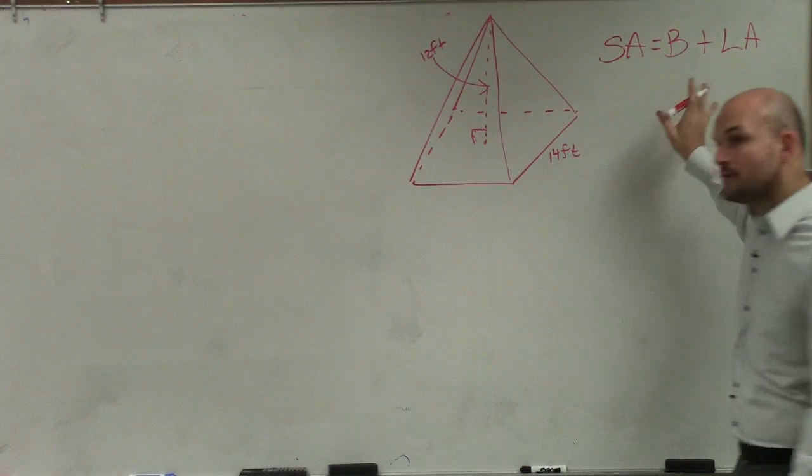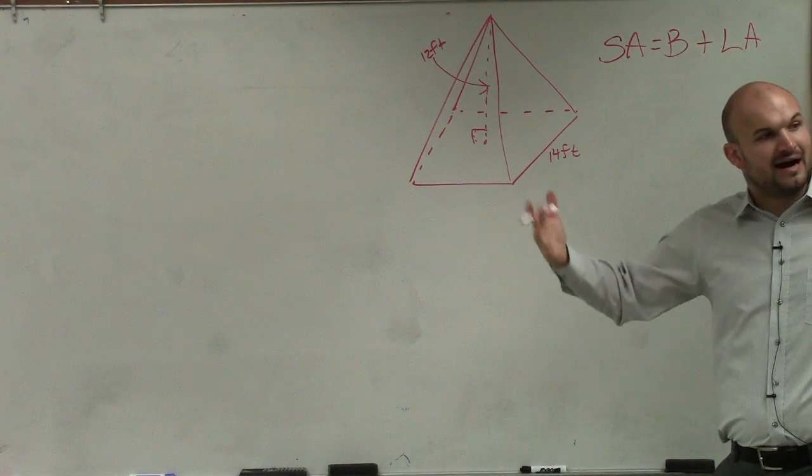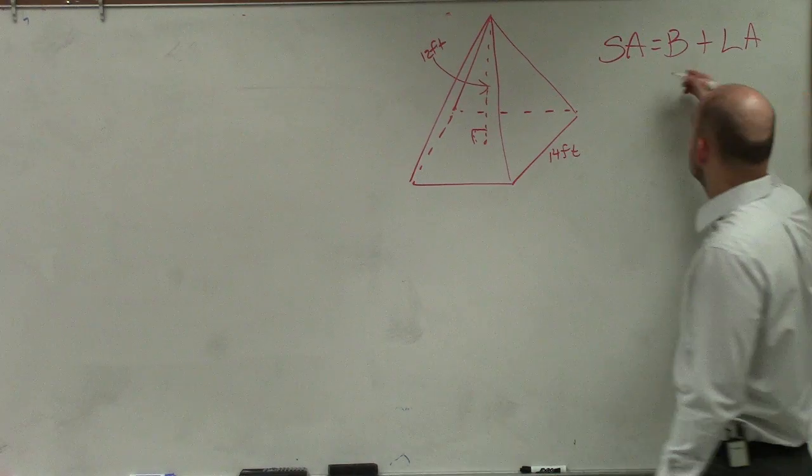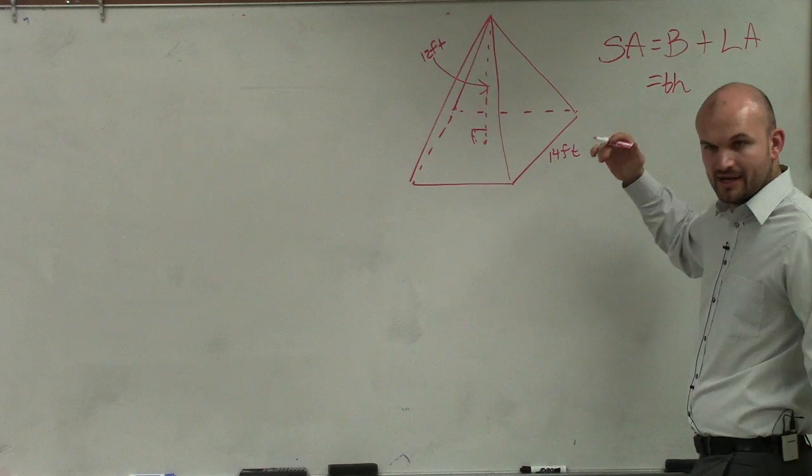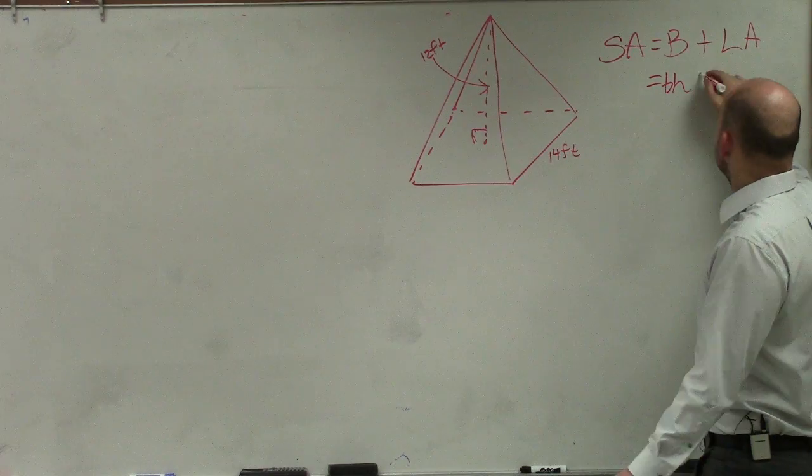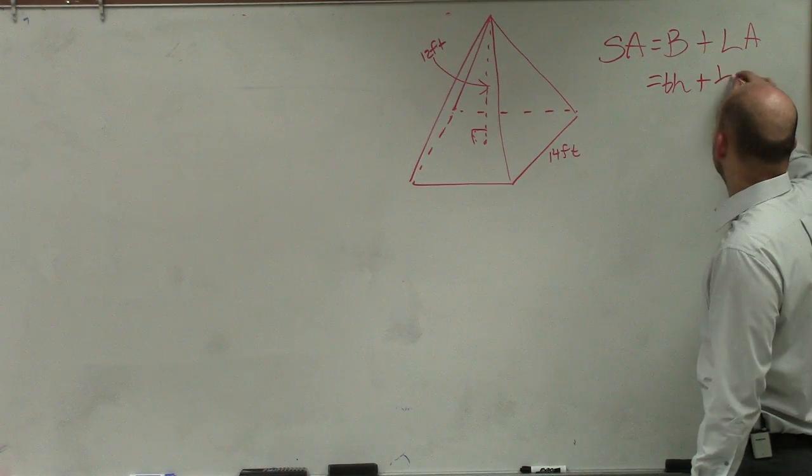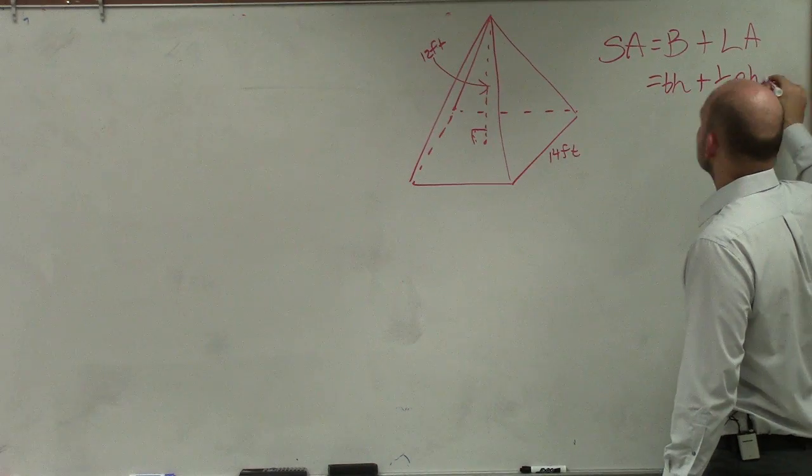we have a regular polygon as a base. So therefore, since we have a regular polygon, I just need to find the area of all those sides. So the area of the base, that's regular. That's base times height, because it's a square.